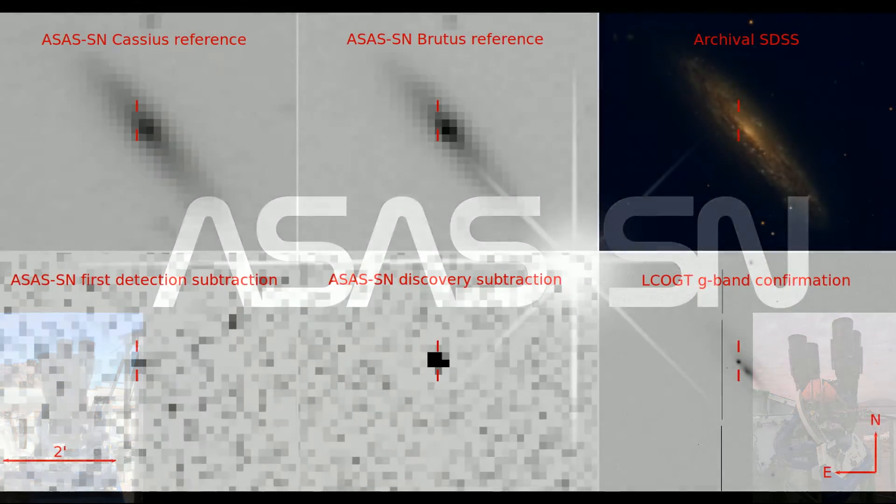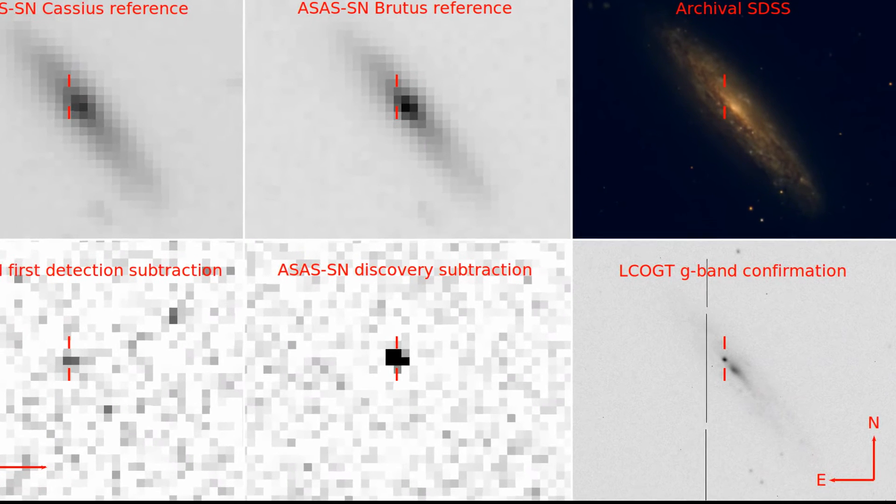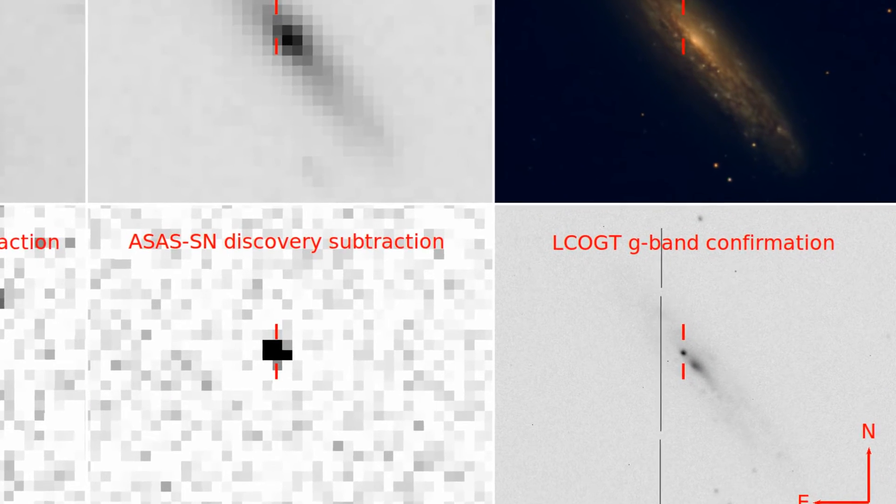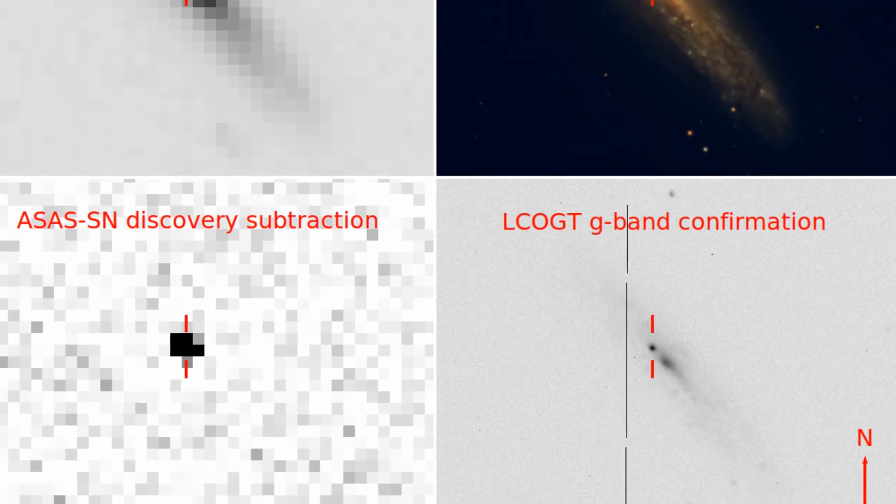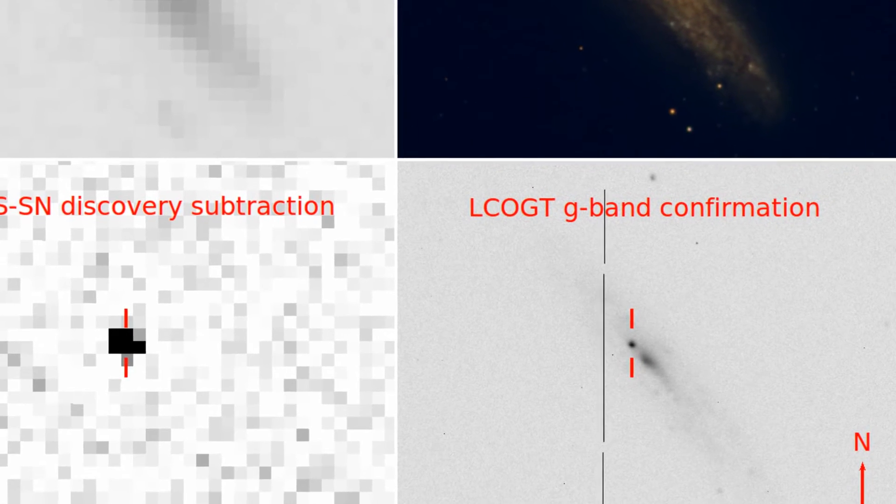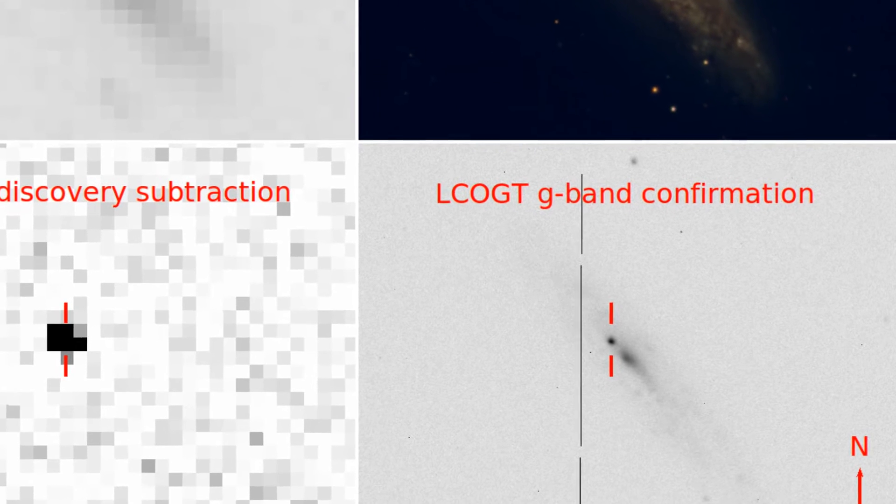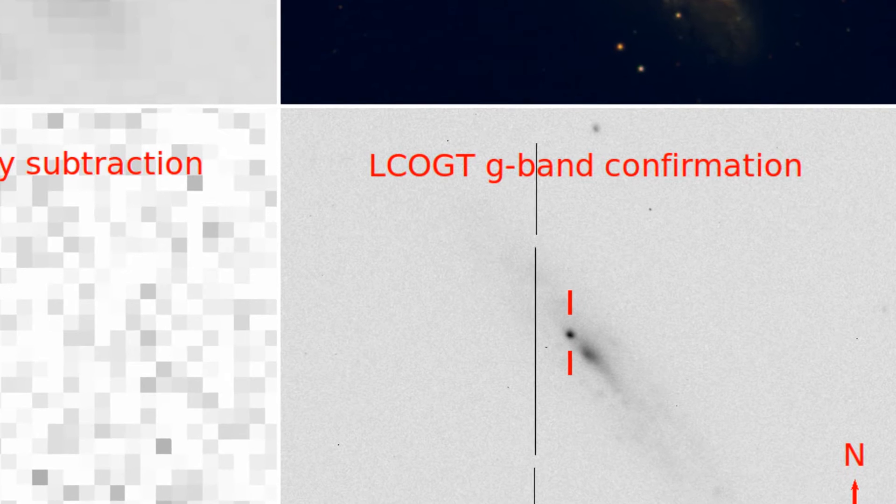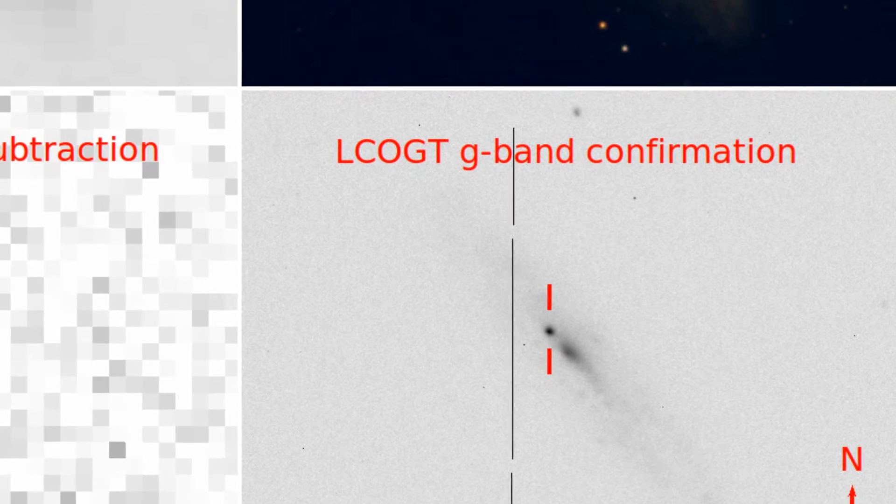On December 9, 2014, we discovered a new source with a V-band magnitude of 14.9. This source was 1 kiloparsec from the center of the galaxy NGC 4666, which is a member of the Virgo Cluster Southern Extension. We designated this new source ASSASSIN 14LP and we released its coordinates to the community less than 5 hours after the discovery images were taken.